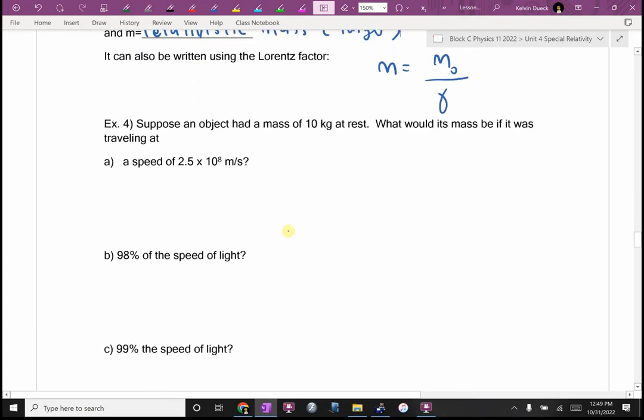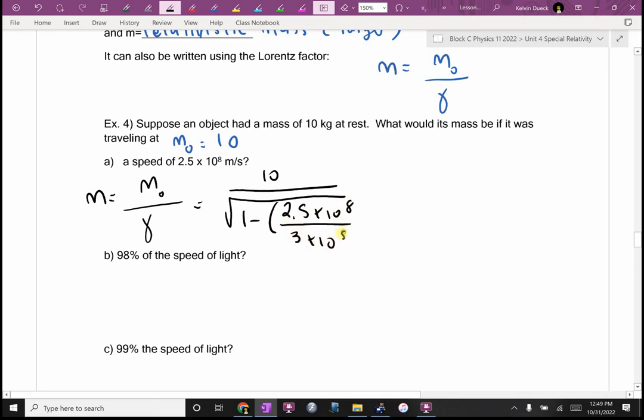So let's do a couple on our calculator really quick just to practice with this. Suppose an object had a mass of 10 kilograms at rest. What would its mass be if it was traveling at? I also gave you this equation on the back of your green sheet. Which mass is example for asking me to find m or m0? So m0, they must have given me m0. And so it's going to be m equals m0 divided by the gamma function. It's going to be 10 divided by the square root of 1 minus 2.5 times 10 to the eighth divided by 3 times 10 to the eighth. Don't forget the square.